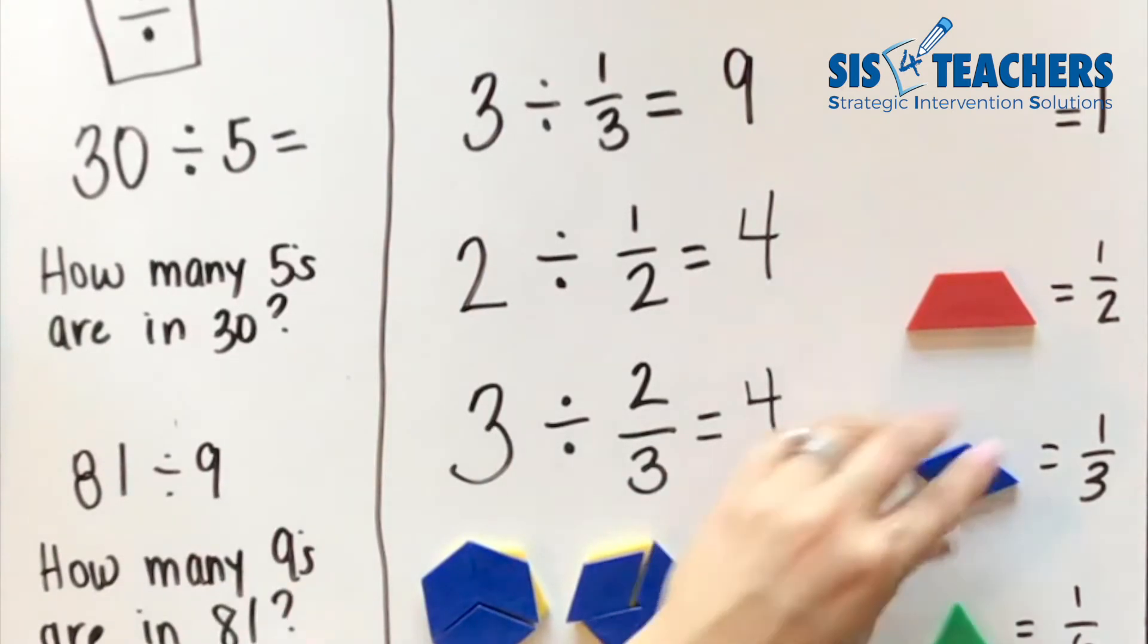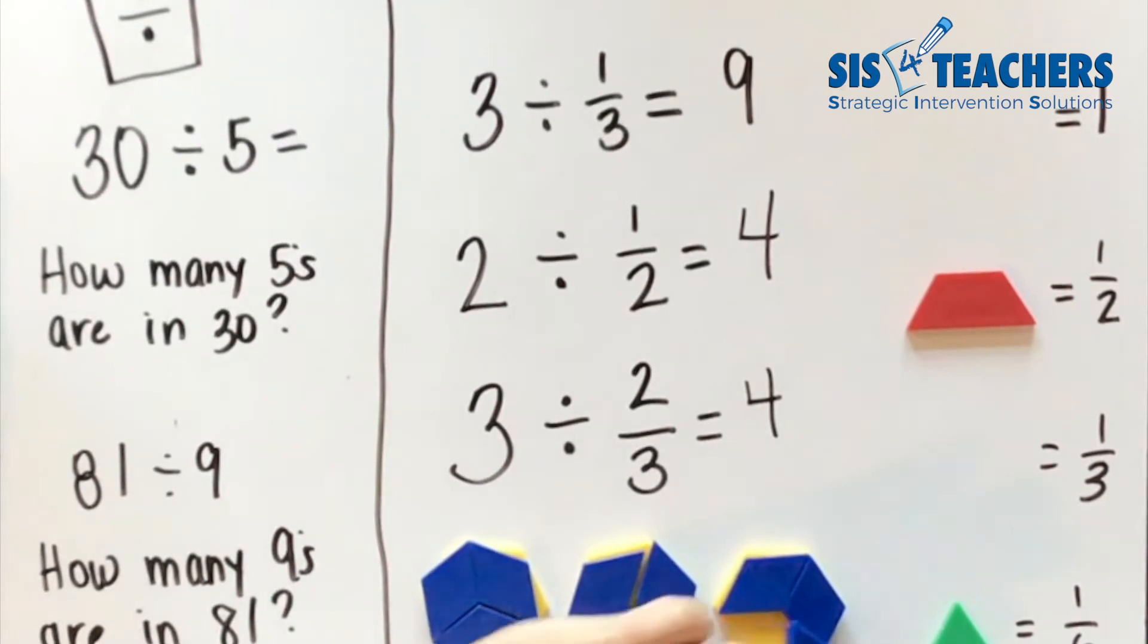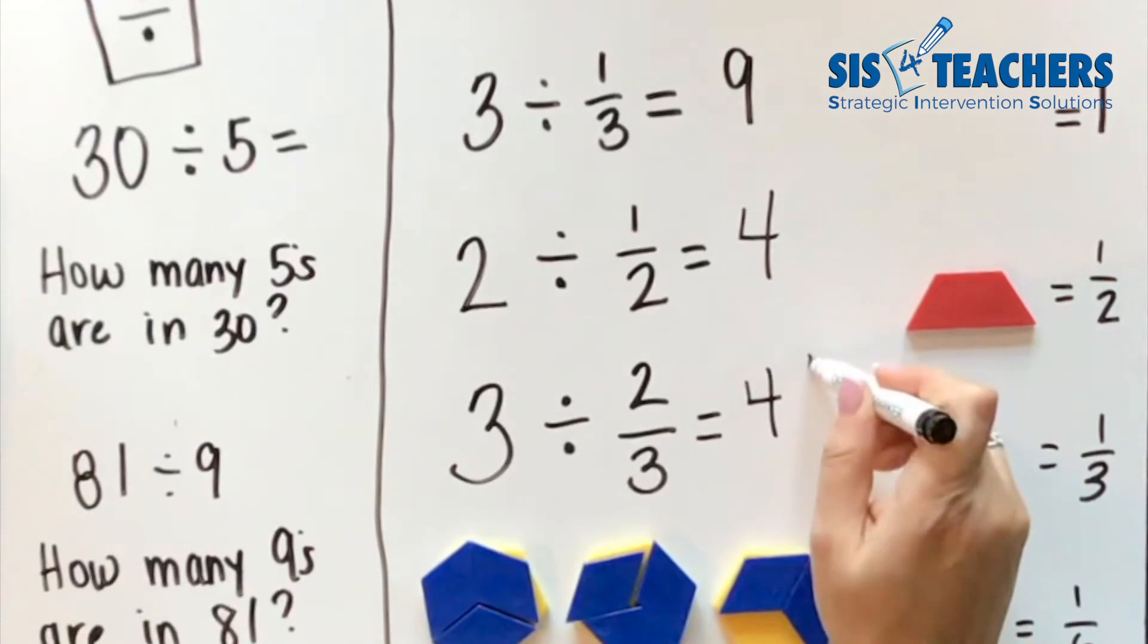But I can't get another two thirds to fit. So it's really half of what this is asking us. It's only half of the two thirds that will fit. So we know this goes in only four and a half times.